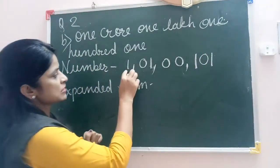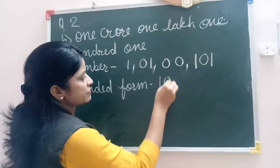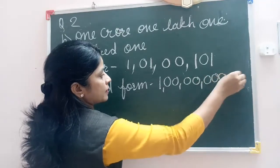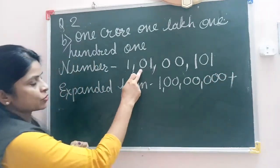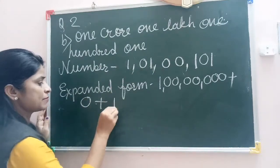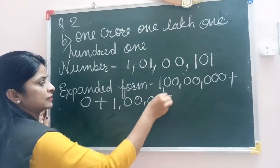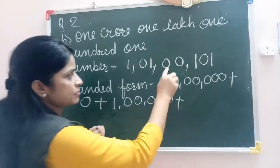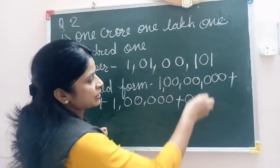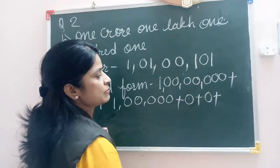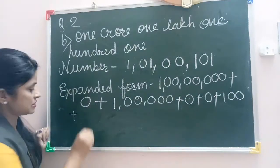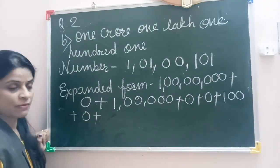So the expanded form of this: 1 multiplied by crore is 1 crore. Plus 0 multiplied by 10 lakh is 0. 1 multiplied by lakh is 1 lakh. 0 multiplied by 10,000 is 0. 0 multiplied by 1,000 is 0. 1 multiplied by 100 is 100. 0 multiplied by 10 is 0. 1 multiplied by 1 is 1. This is the expanded form of the given number.